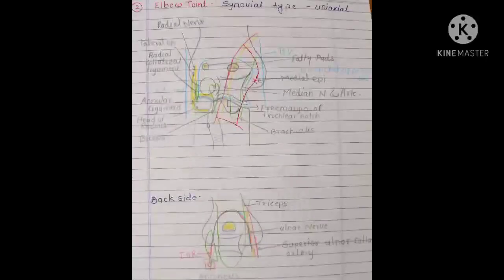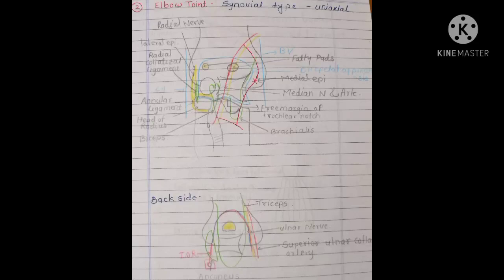Nerve supply of the elbow joint: ulnar nerve, median nerve, radial nerve, and the musculocutaneous nerve through its branch to the brachialis. Relations: anteriorly — brachialis, median nerve, brachial artery, and tendon of biceps brachii; posteriorly — triceps brachii and anconeus; medially — ulnar nerve, flexor carpi ulnaris, and common flexors; laterally — supinator, extensor carpi radialis brevis, and other common extensors. Movements: flexion by brachialis, biceps brachii, and brachioradialis; extension by triceps brachii and anconeus.